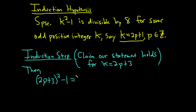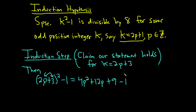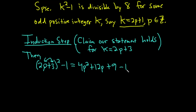Expanding 2p plus 3 squared minus 1: square the first term to get 4p squared, multiply the terms and double to get 12p, square the last term to get 9, then subtract 1. This gives 4p squared plus 12p plus 9 minus 1, which equals 4p squared plus 12p plus 8.